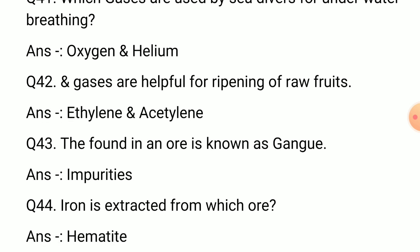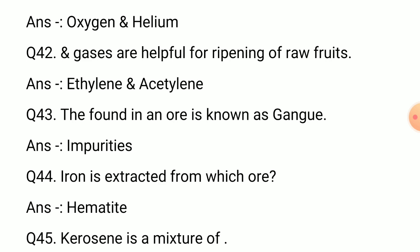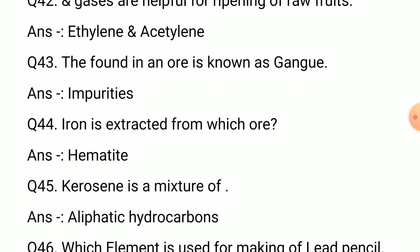Question number 42: Which gases are helpful for ripening of raw fruits? Answer: Ethylene and acetylene. Question number 43: What is found in an ore and is known as gangue? Answer: Impurities.